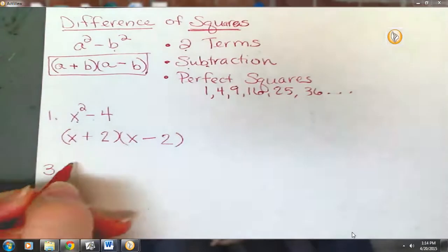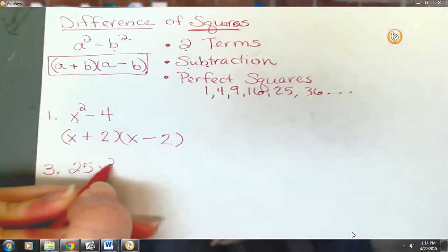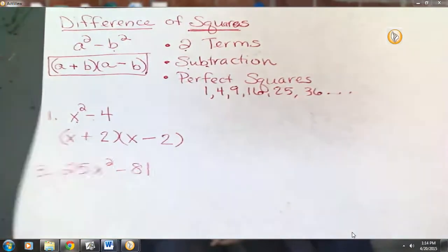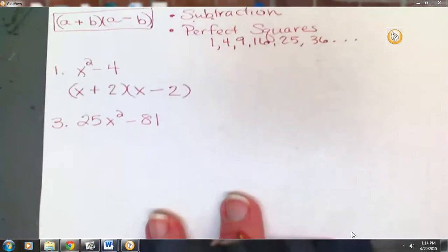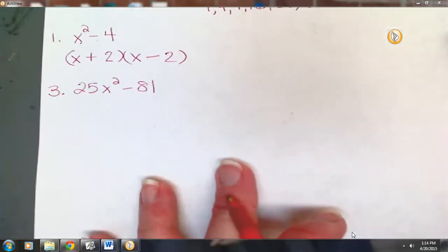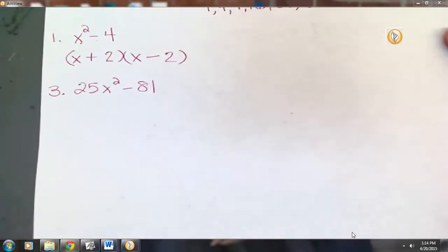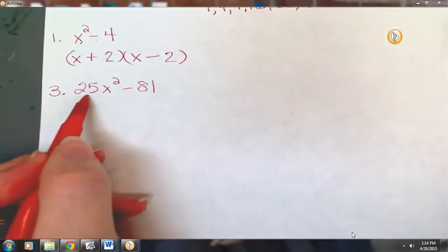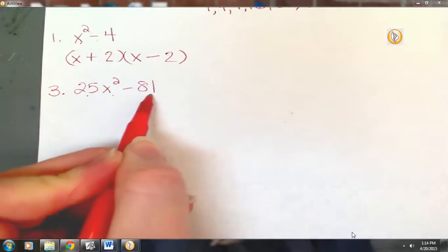Look at number 3. 25x squared minus 81. Is this a difference of squares? Yes. Do we have two terms? Yes. Subtraction? Yes. Perfect squares? Yes. 25 is a perfect square, so is x squared and 81.